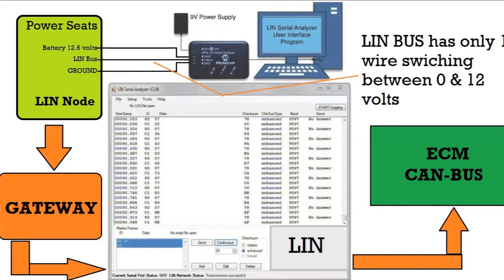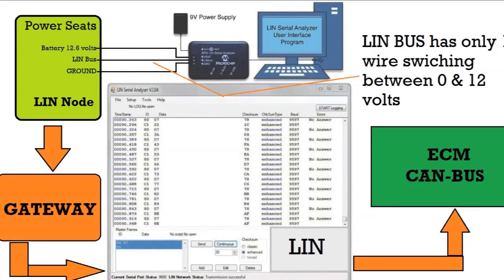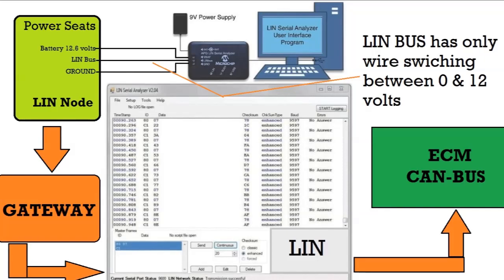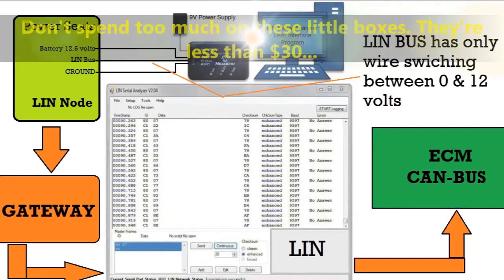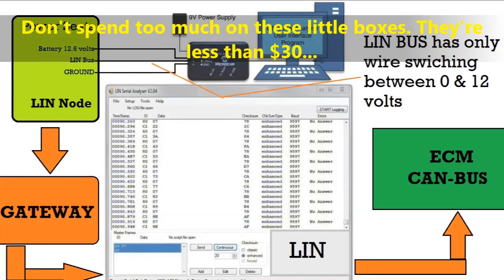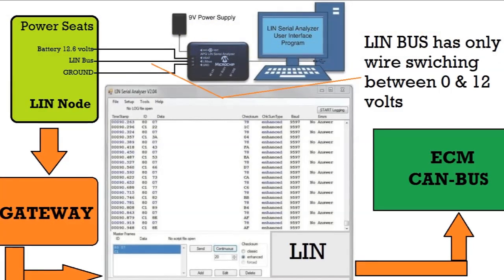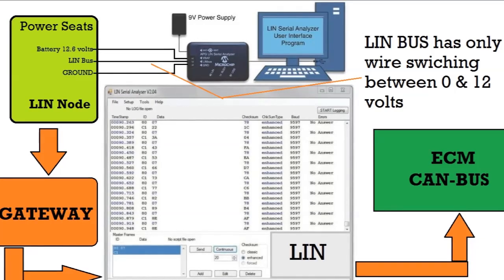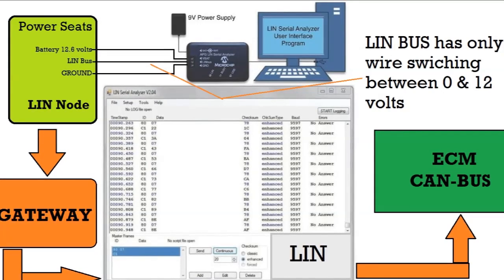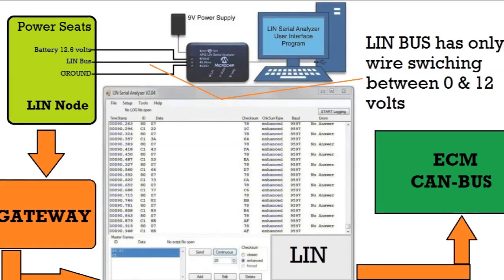Now this particular diagram that you see on screen, this is exactly what you're going to see when you use a LIN analyzer to study the traffic that goes back and forth. And as you can see on screen, you see the LIN node, which is a power seat computer. Then you're going to see it's connected to a gateway. The gateway then is connected to all the other modules, especially the modules that are like the ECM CAN bus, for example. So basically this is the way it's done.